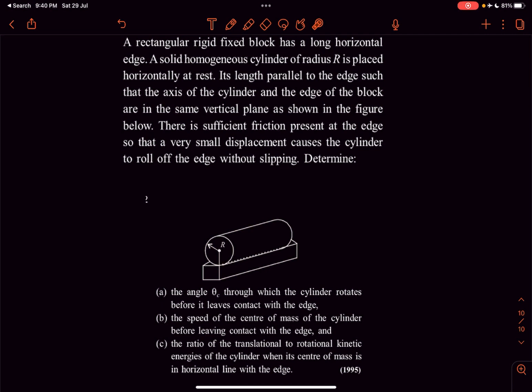In this question we have a rectangular rigid fixed block that has a horizontal edge. A solid homogeneous cylinder of radius r is placed horizontally at rest, its length parallel to the edge such that the axis of the cylinder and the edge of the block are in same vertical plane. There is sufficient friction present at the edge so that very small displacement causes the cylinder to roll off the edge without slipping.